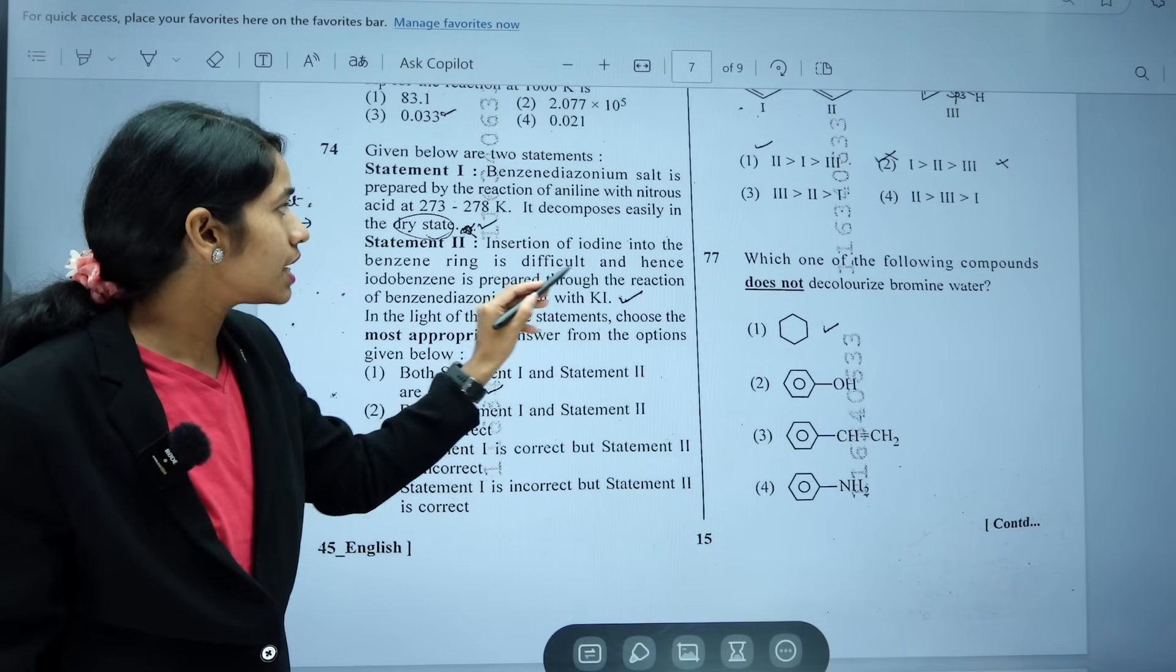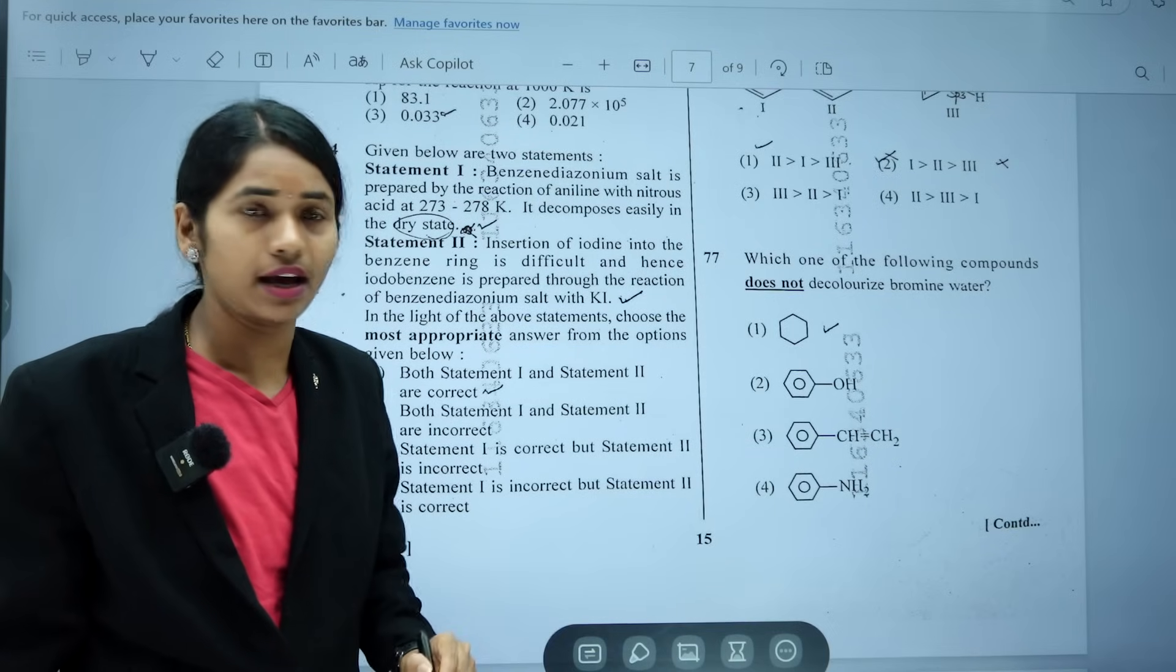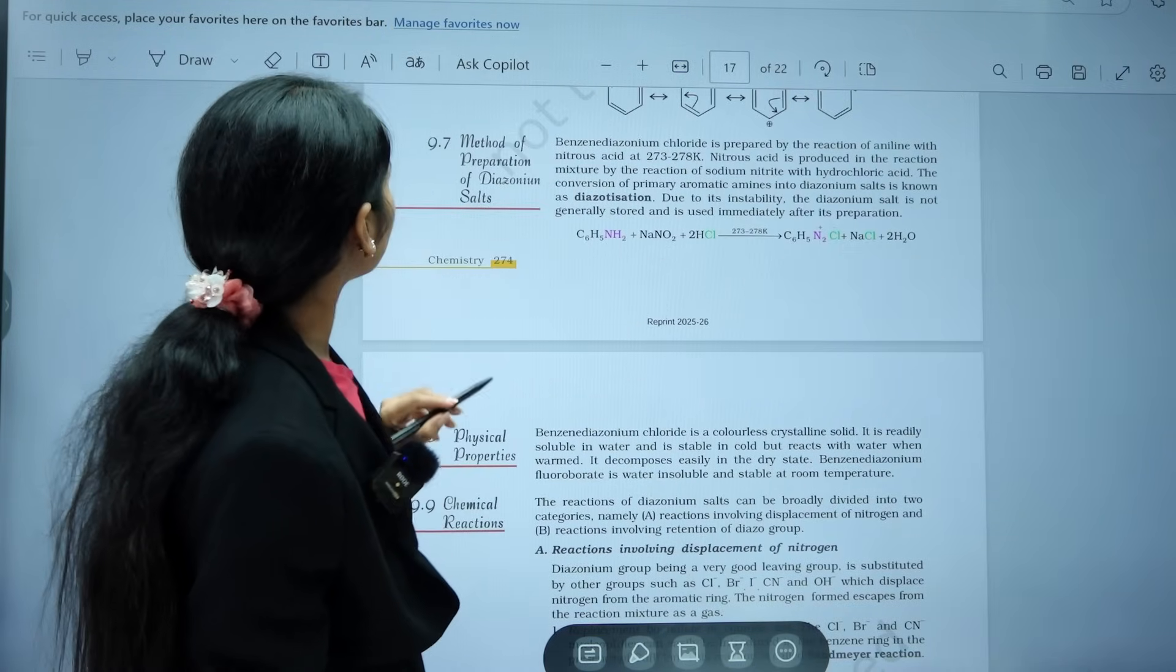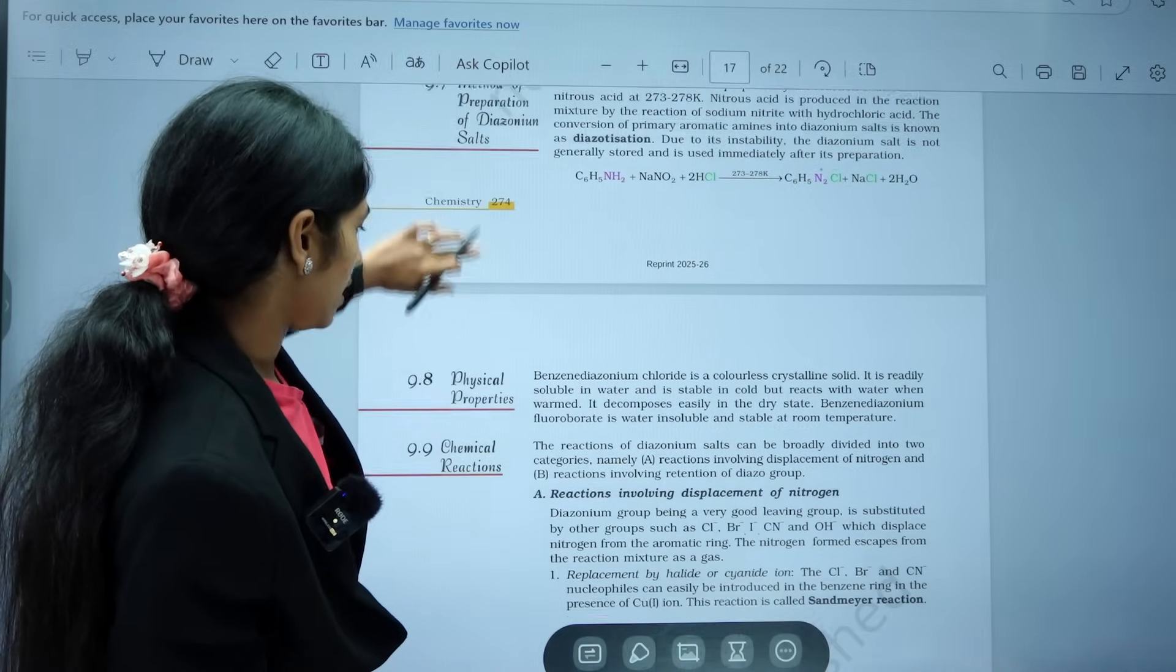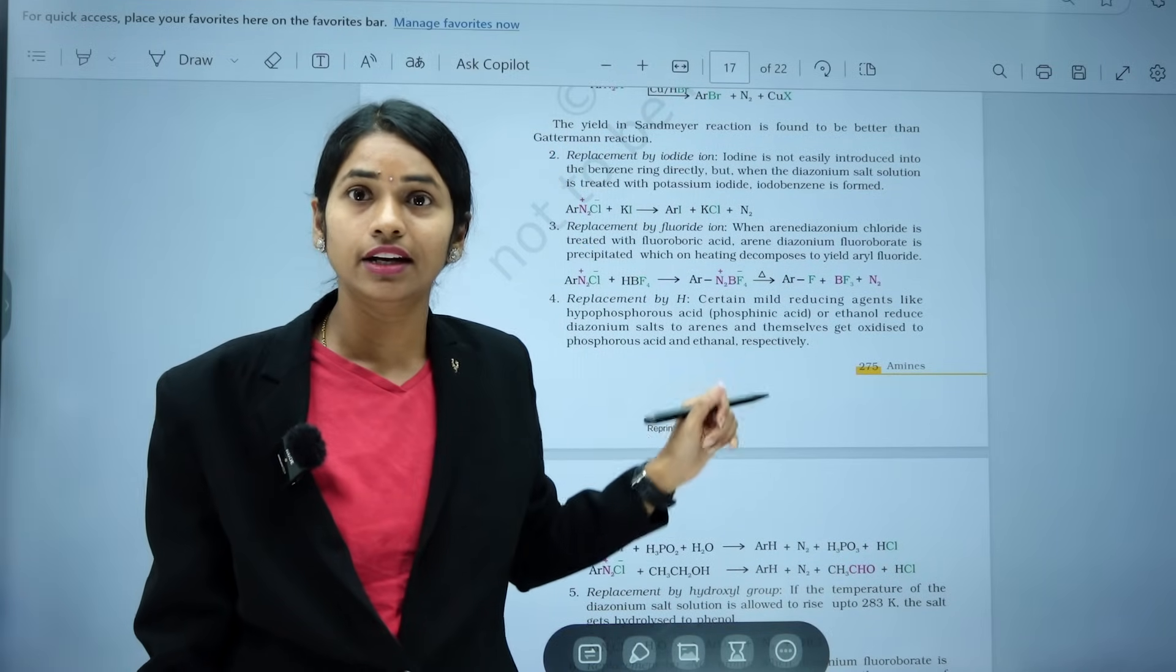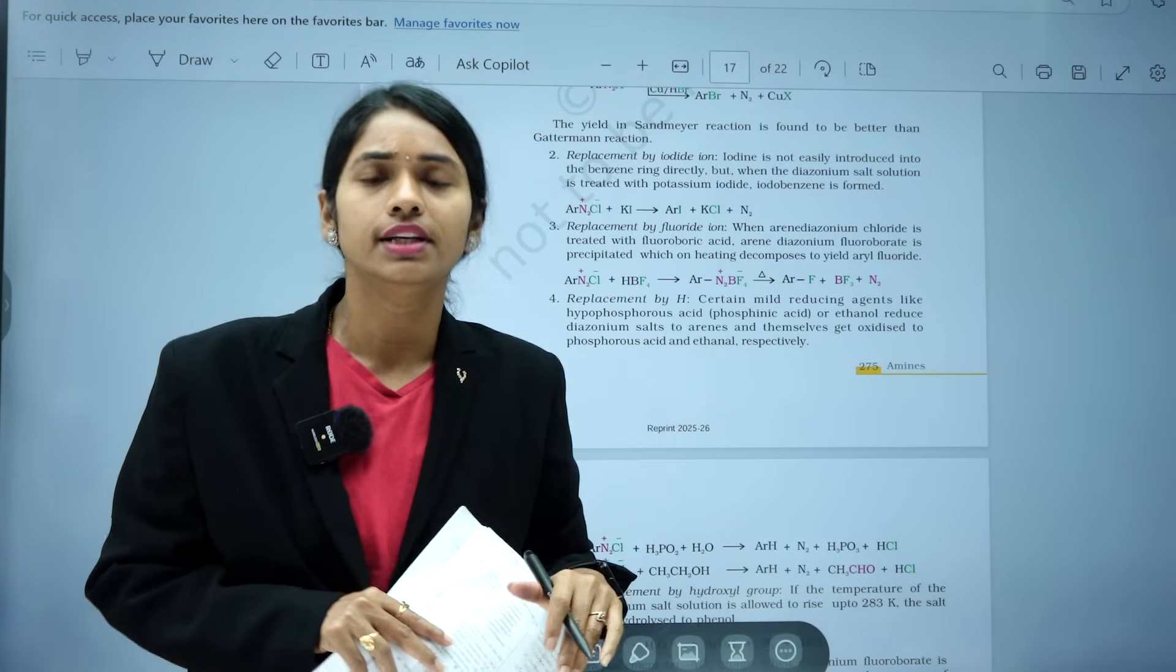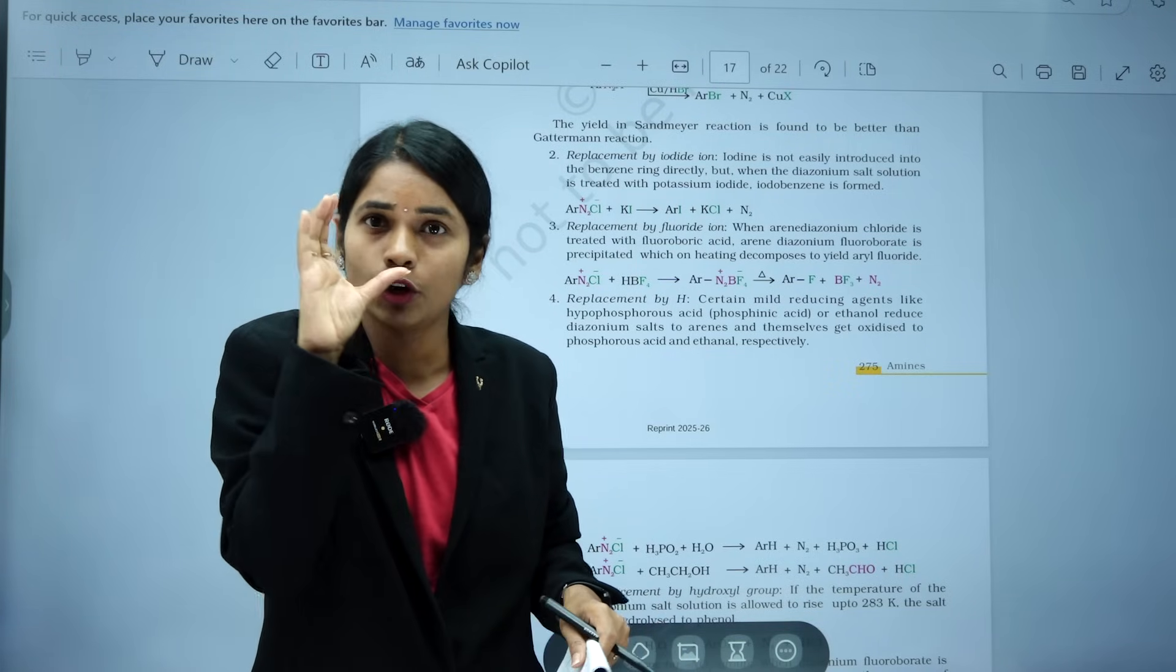But see the part 2 which is asked in the question. Insertion of iodine into benzene ring is difficult. Hence, iodobenzene is prepared through the reaction of benzene diazonium salt with KI. Insertion of iodine into benzene ring is difficult. Fine. But this line KI reaction, you will come to know only if you read this part. Which part if you read? This part. In 2025 during preparation, as this particular portion is deleted, new students will find this particular question difficult.